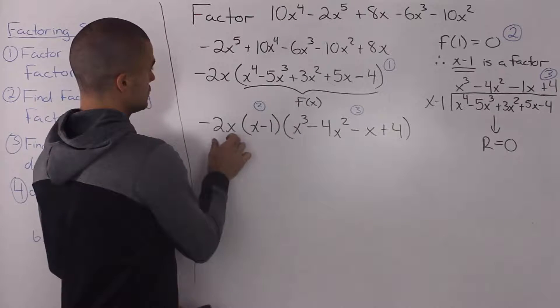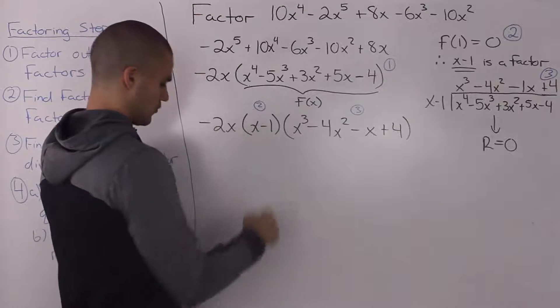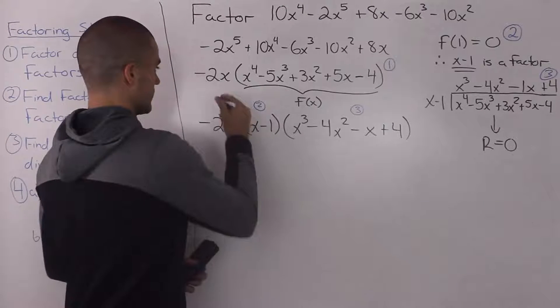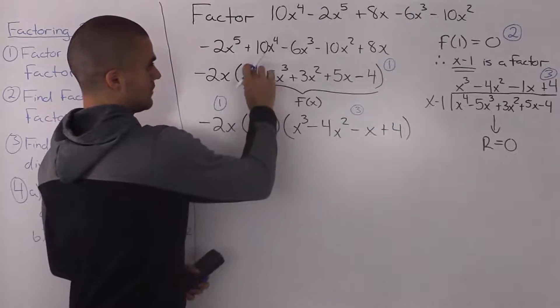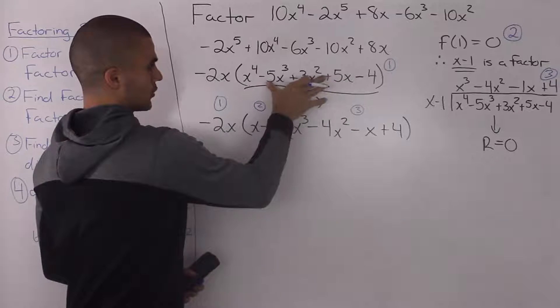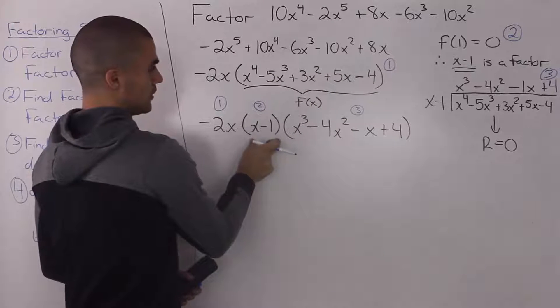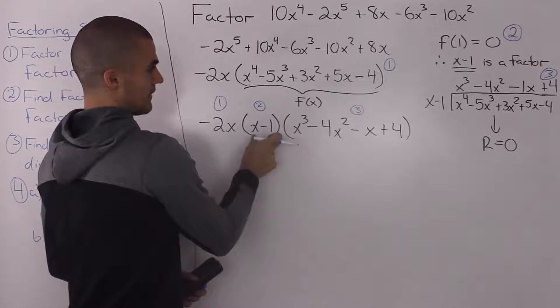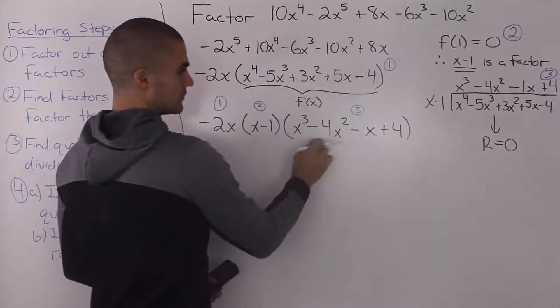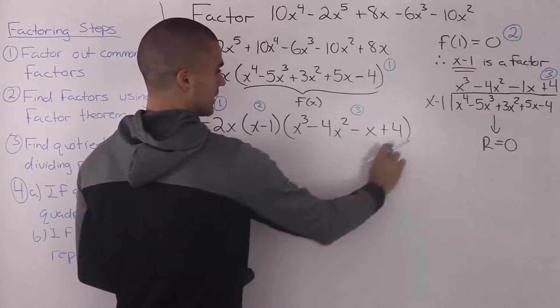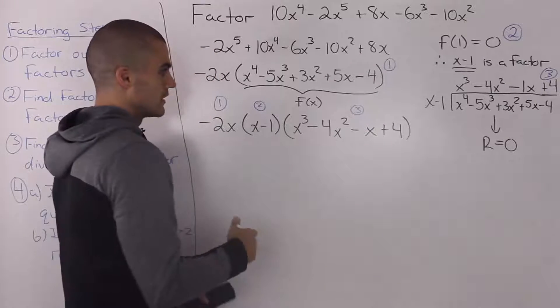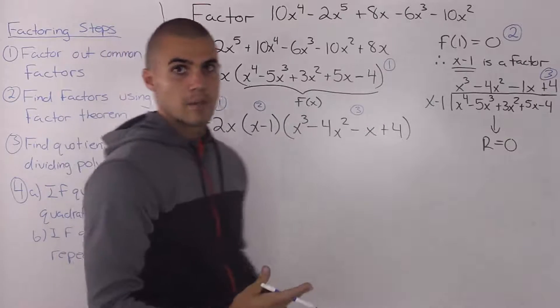So far what we got is the negative 2x that we factored out in step 1. Actually, I'll write step 1 here. Then we had this polynomial to work with, and we found out that x minus 1 was a factor of it. And then we divided that polynomial by x minus 1 and ended up getting this quotient in step 3. So now we can move on to step 4.